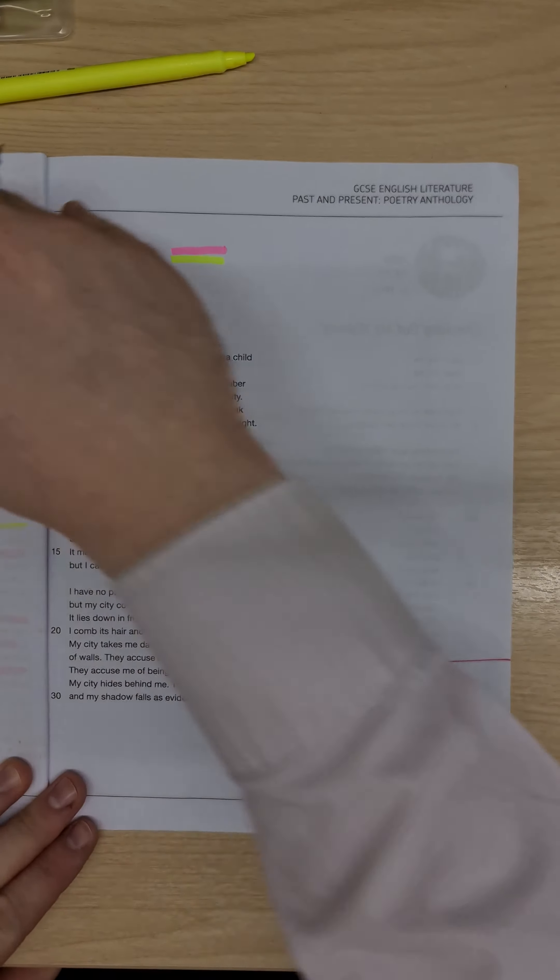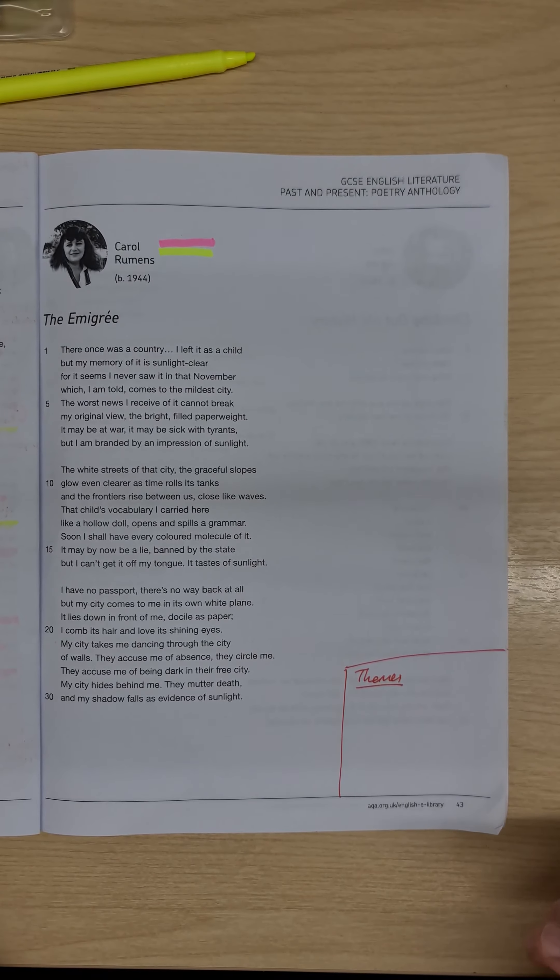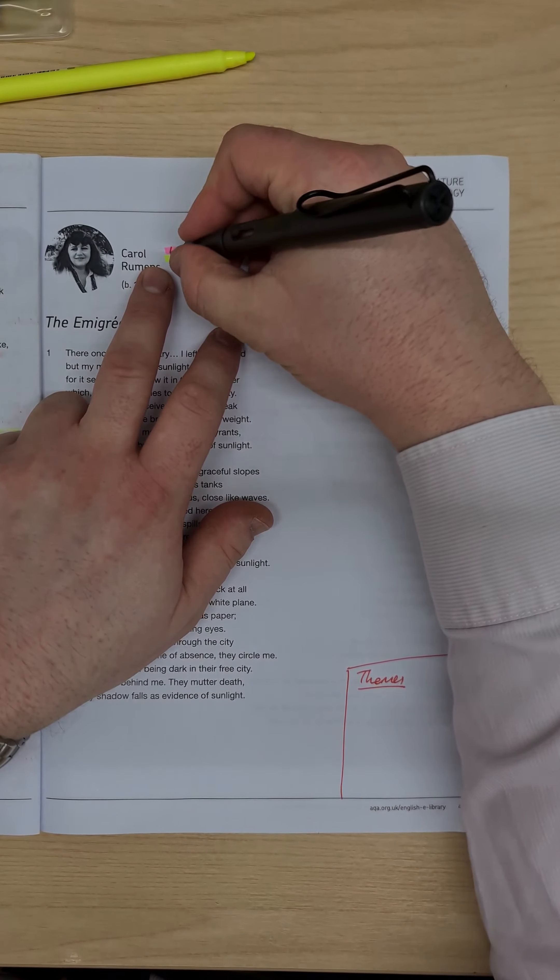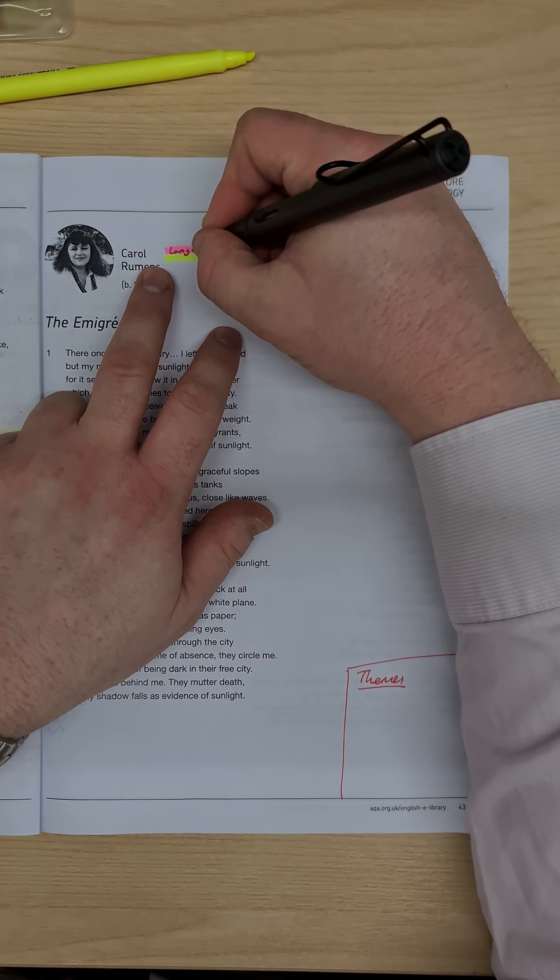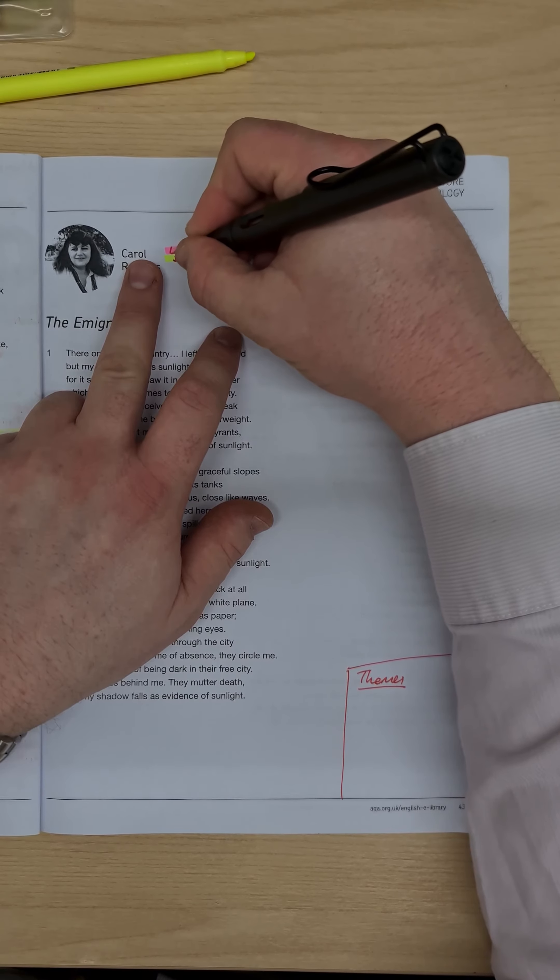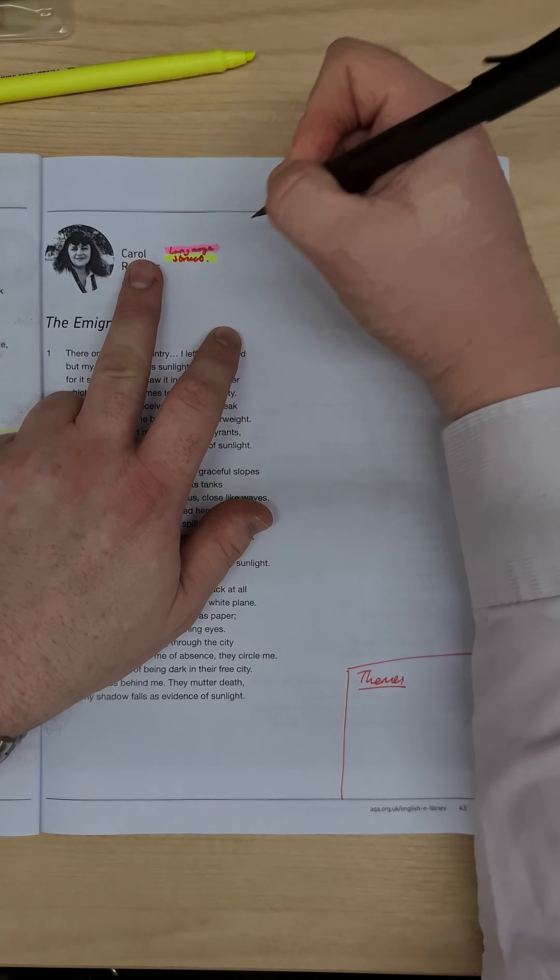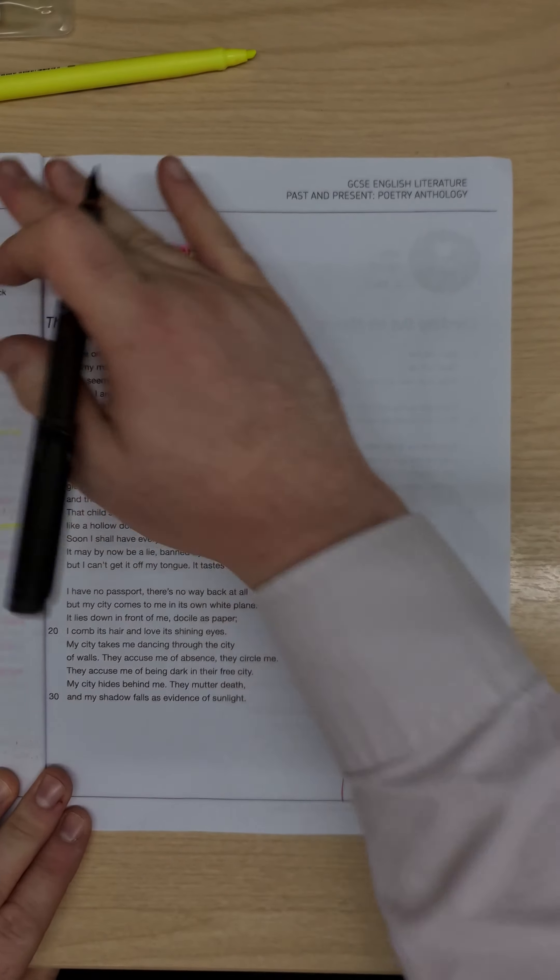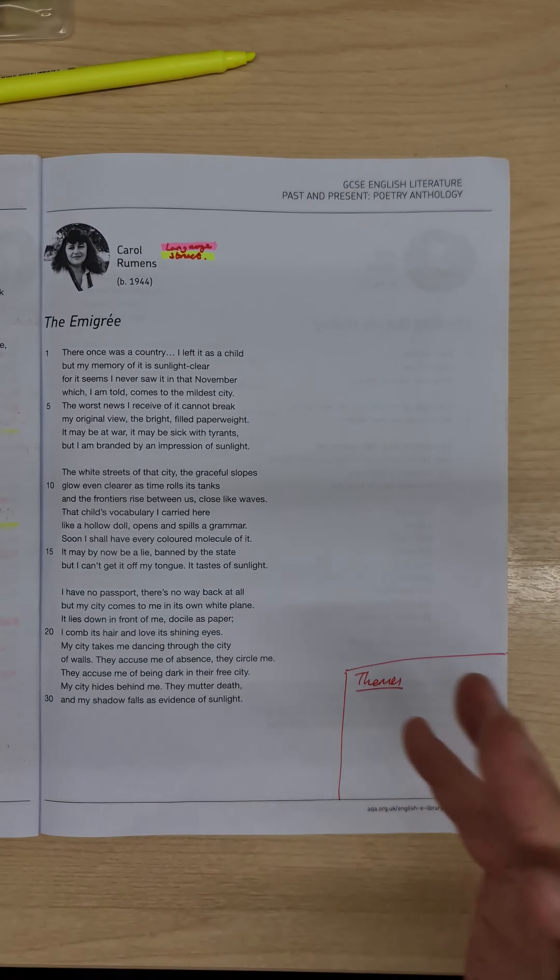So today's poem is The Emigre by Carol Rumens. As normal we're going to put our language notes in the pink highlighted section and any structural notes will go in yellow. Sorry.